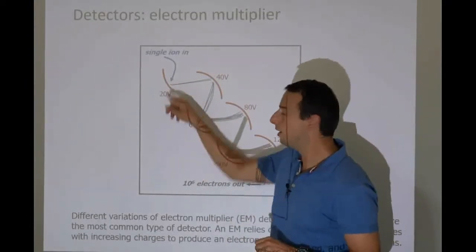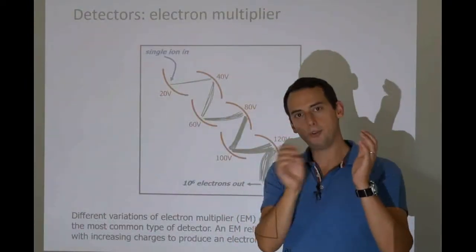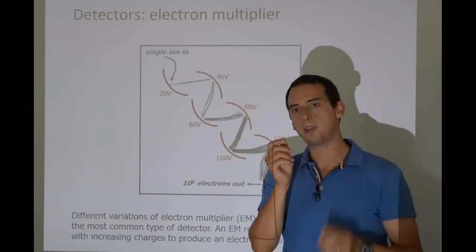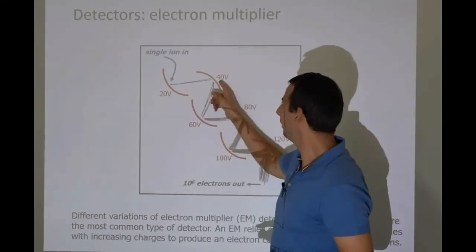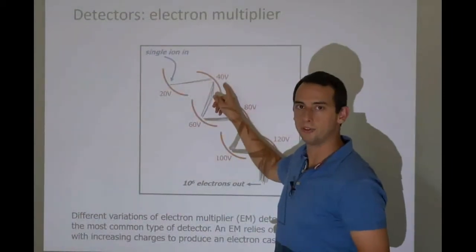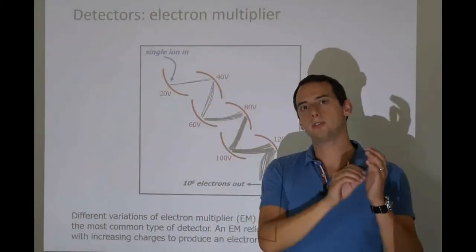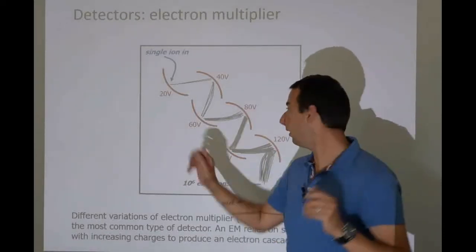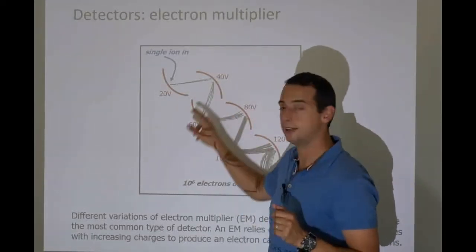to knock free a few electrons. Now, since we have another dynode with a higher voltage somewhere, these electrons or positrons are now attracted to the second dynode,